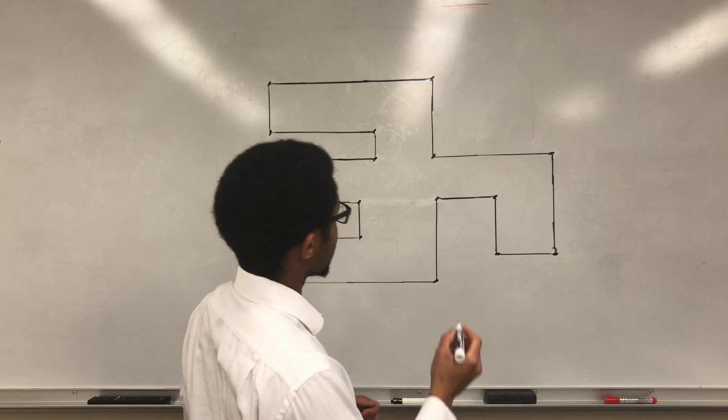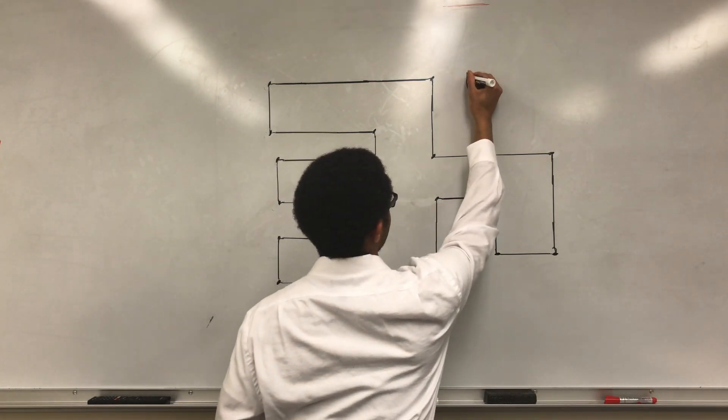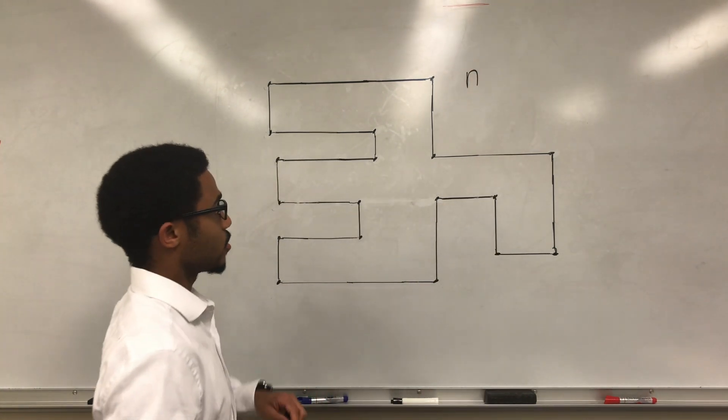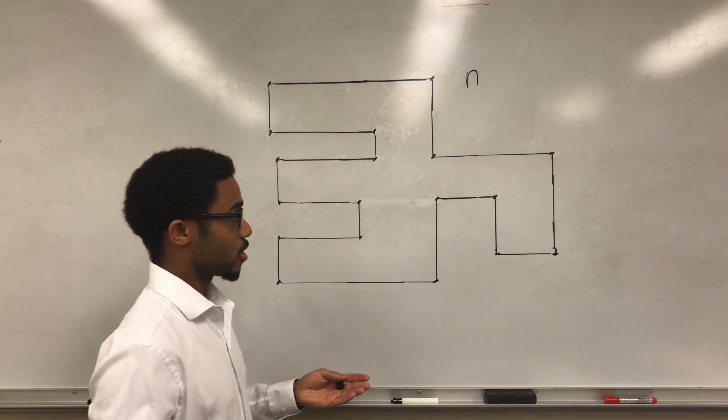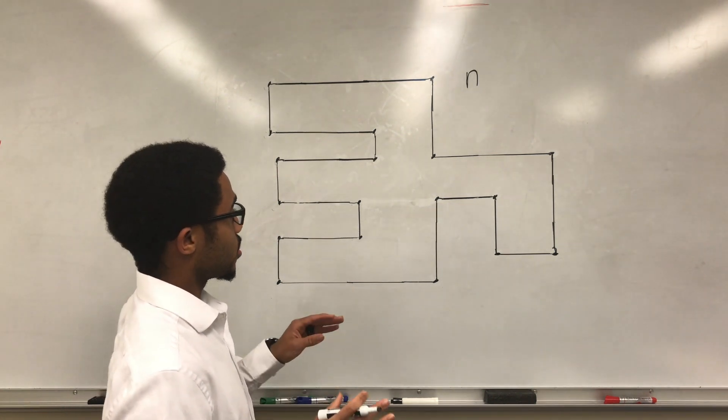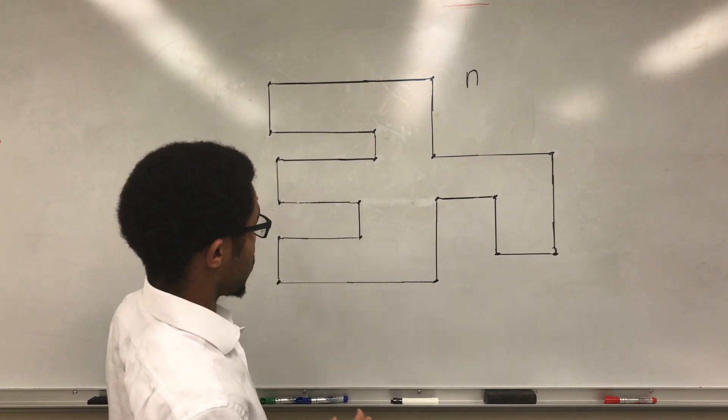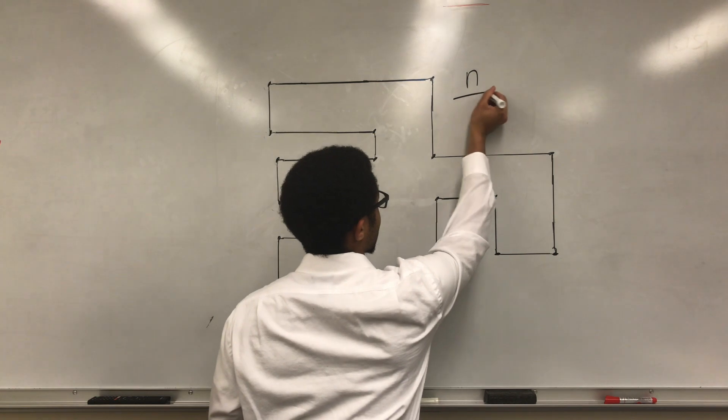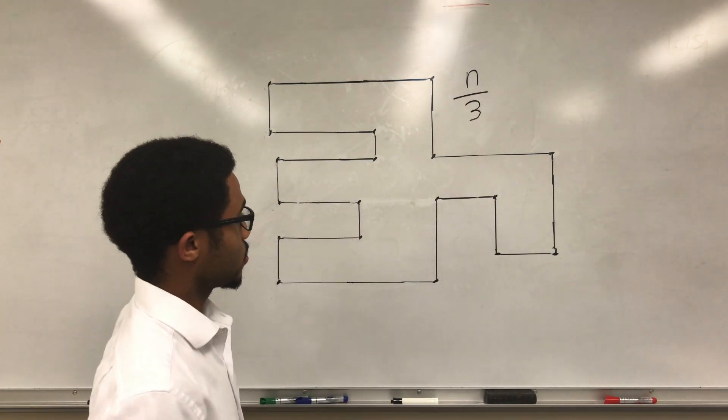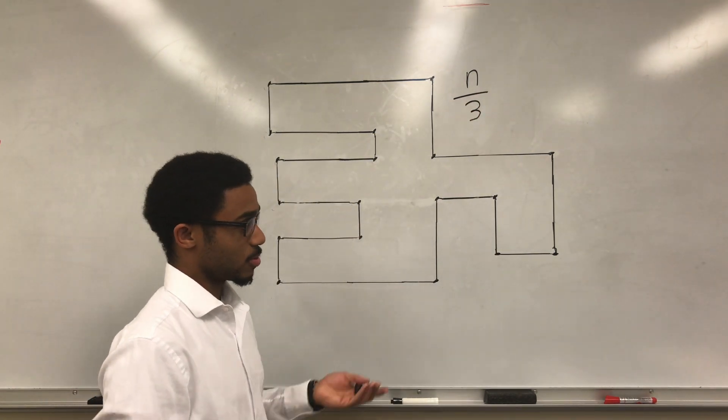So let's use the letter N to represent the number of walls that a building has. So according to Fisk, any building that has N walls can be guarded by at most N over 3 guards. So this is the formula that we're going to use, let's try it out on some examples.